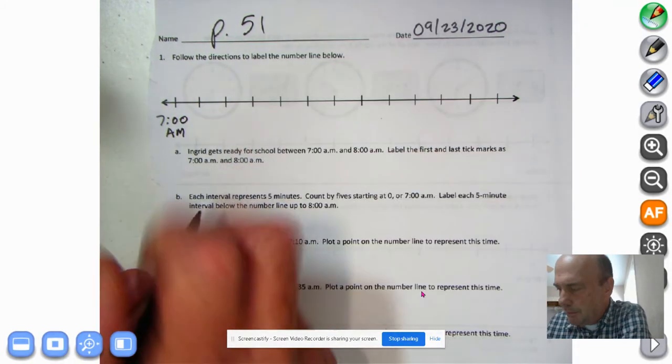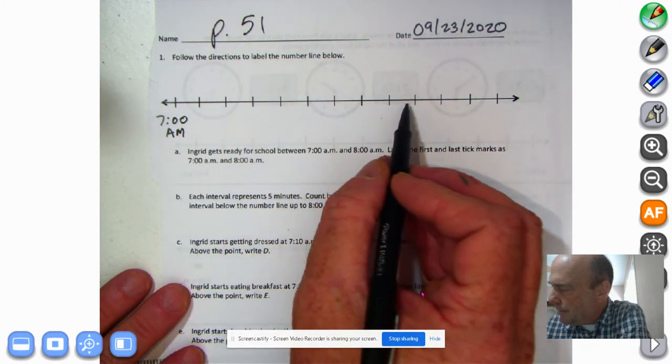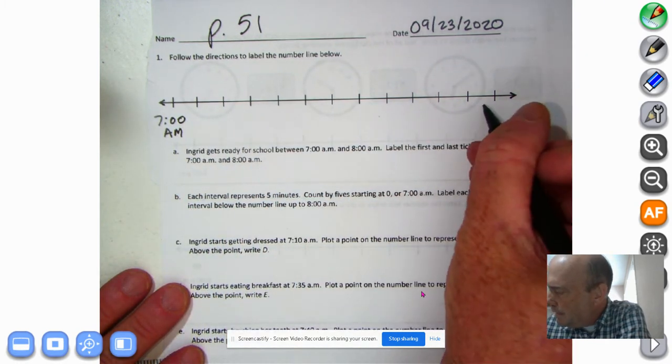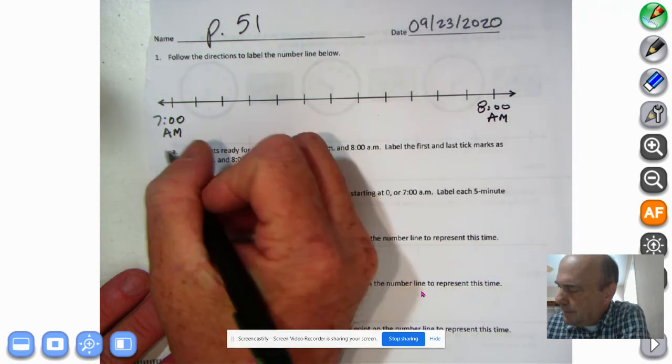And over here, let's double check: 5, 10, 15, 20, 25, 30, 35, 40, 45, 50, 55, 60. We'll put 8 o'clock AM. Check.